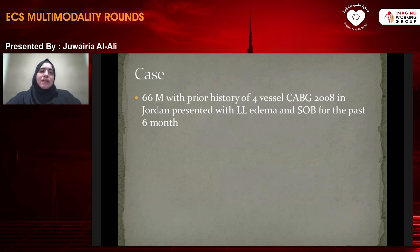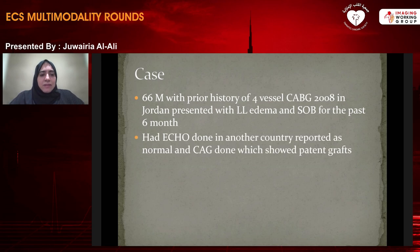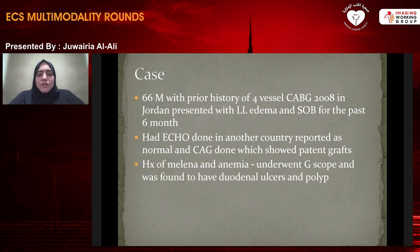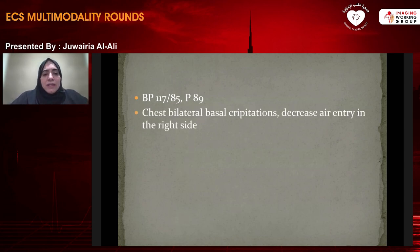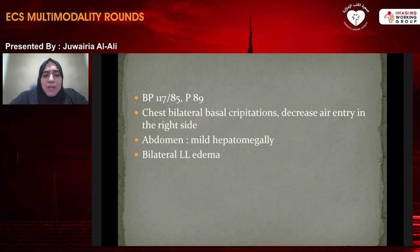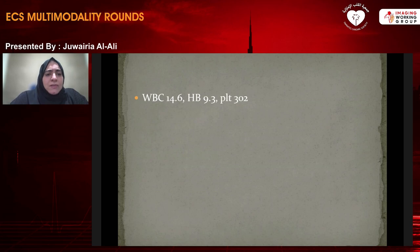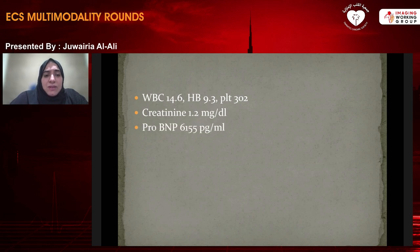This is a 66-year-old male with prior history of four-vessel CABG in 2008, presenting with lower limb edema and shortness of breath for the past six months. His echo done in another country was reported as normal. He had a history of melena and anemia, underwent GI scope and was found to have duodenal ulcer and polyps. Blood pressure was 117/85, pulse 89. He had bilateral basal crepitations, decreased air entry on the right, mild hepatomegaly, and bilateral lower limb edema. His WBC was 14.6, hemoglobin 9.3, platelets 300, troponin 1.2, and pro-BNP was 6,155, which is elevated.